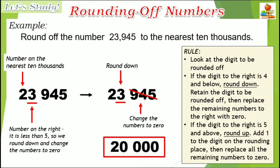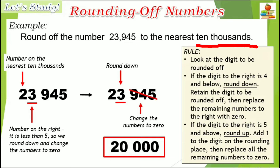Next, we'll try to round off to the nearest ten thousands. This time, the digit in the ten thousands place is 2. The number to its right is 3. It is less than 5, so we're rounding it down. We retain the digit to be rounded off and replace the remaining numbers to the right with 0. So 23,945 rounded to the nearest ten thousands is 20,000.